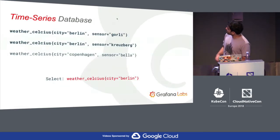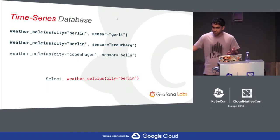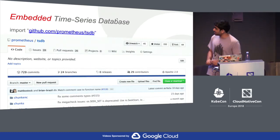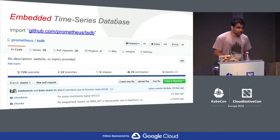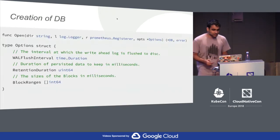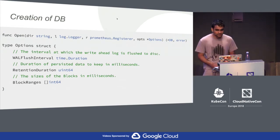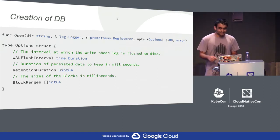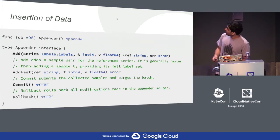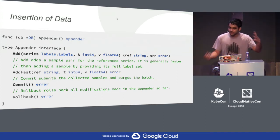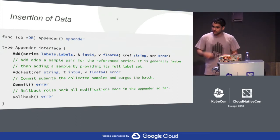This is the data structure of the time series database — millions of samples marked by time, and millions of time series. TSDB, the new engine in Prometheus 2.0, is actually an embedded time series database. Prometheus imports it. If you write Go and want to handle time series data, you can import Prometheus TSDB. It's a very simple interface. You open the database by giving the logger, passing in the directory and a bunch of options. Then you create an appender, put all the data you want into it, and commit it.